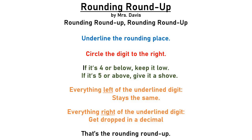And you might remember from our whole numbers, there's only one line here that changed. When we did whole numbers, we said everything right of the underline digit becomes a zero. But here with decimals, we're actually going to drop that section — so we're going to drop that number.